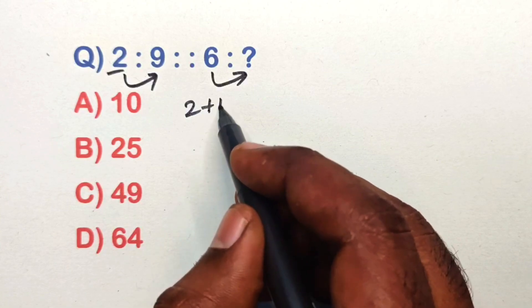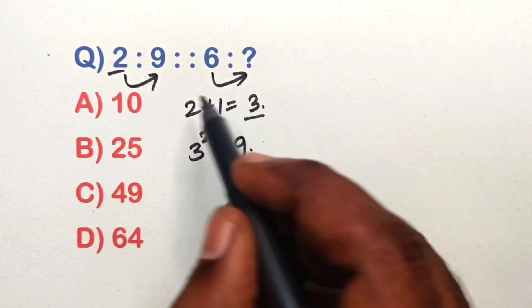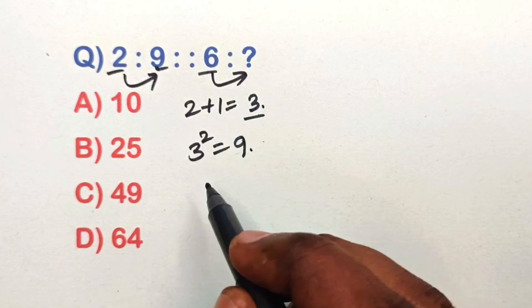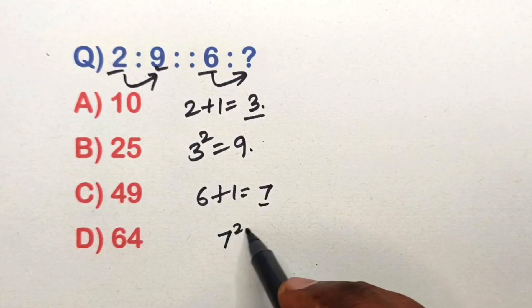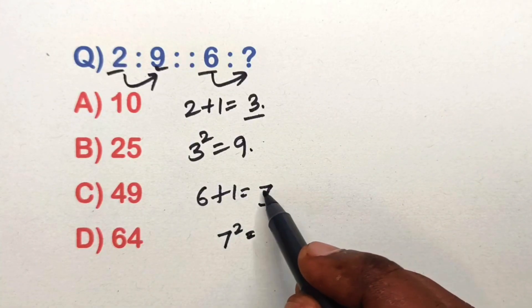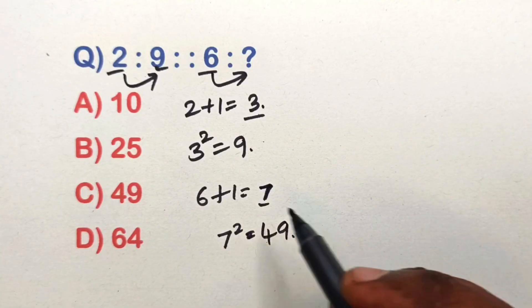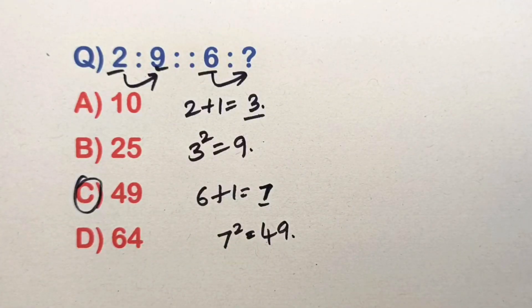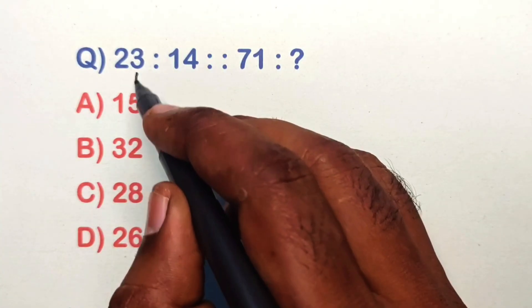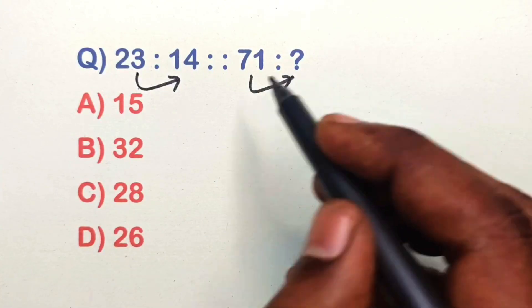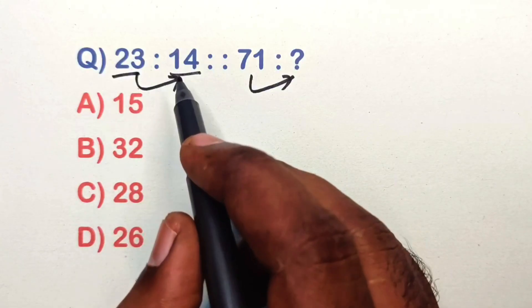Find the relation in this analogy question. Take 2: 2 plus 1 is 3. Take 3: 3 squared is 9. Same way, take 6: 6 plus 1 is 7. Take 7: 7 squared is 49. That is option C, the correct answer.